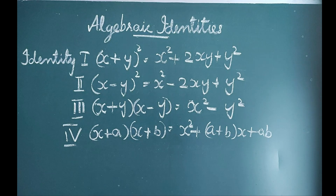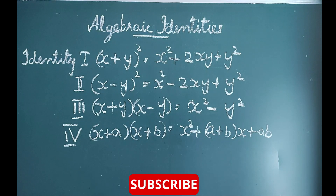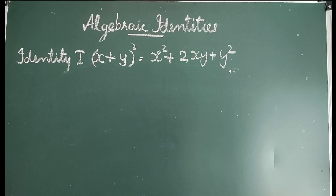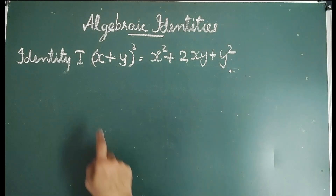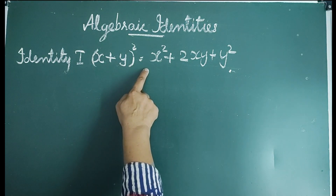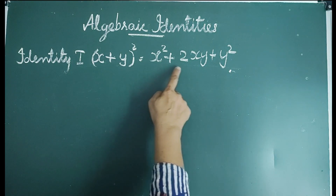You must have also used some of these algebraic identities to factorize algebraic expressions. You can also see their utility in computations. Let us understand these identities by solving examples. We know the first identity is (x + y)² = x² + 2xy + y².